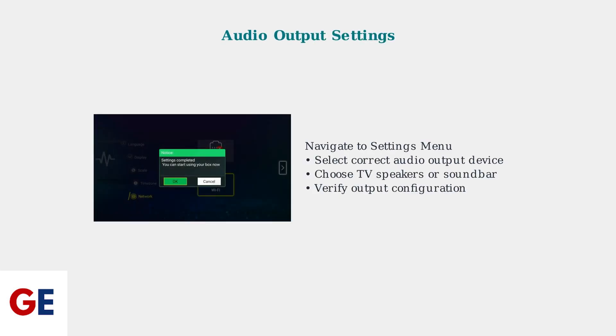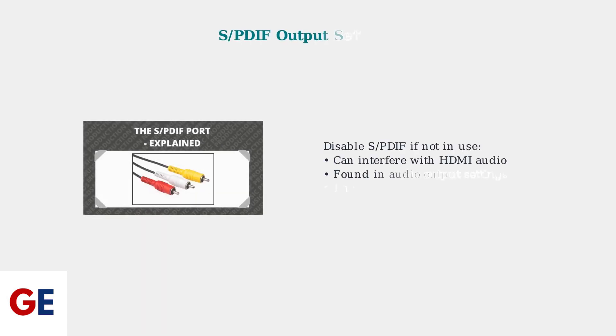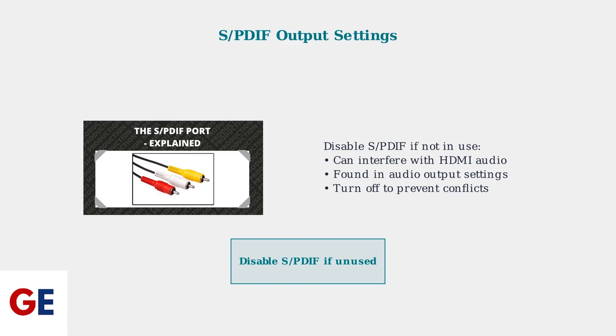When basic audio checks don't resolve your VCBOX V2 Pro issues, it's time to examine the device's audio output settings. Navigate to the settings menu to access these advanced configuration options. One common issue is SPDIF output interference. If you're not using SPDIF connections, disable this output in your settings as it can conflict with HDMI audio transmission.